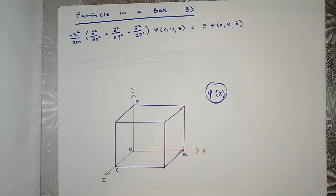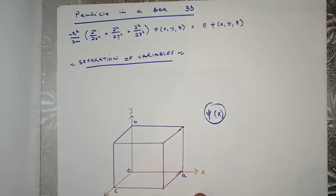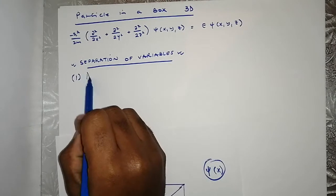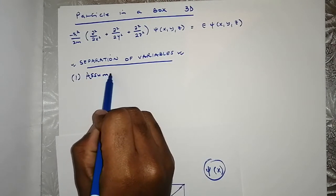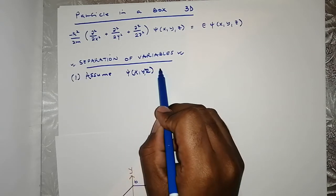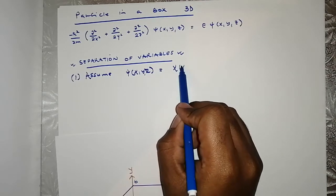For the differential equation, we're going to use a very powerful technique called separation of variables. Eventually, we are going to arrive at a point where we are able to write the energy as having independent contributions from the variables x, y, and z. First and foremost, in this technique of separation of variables, we need to assume that our wave function, which is in three variables, can be expressed in a separable form.